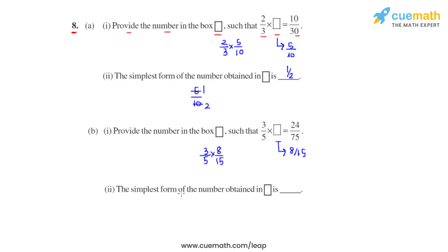The second bit asks us to find the simplest form of the number obtained. As we can see, in 8 over 15 there is no common factor apart from 1, which means it is already in its simplest form. So the answer for the second bit of part B is 8 over 15 itself, and this is how we solve this problem.